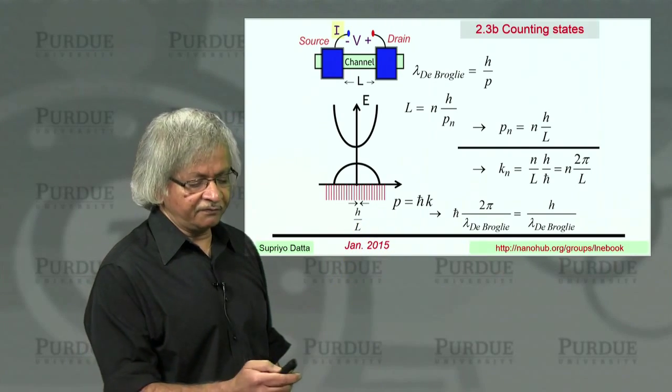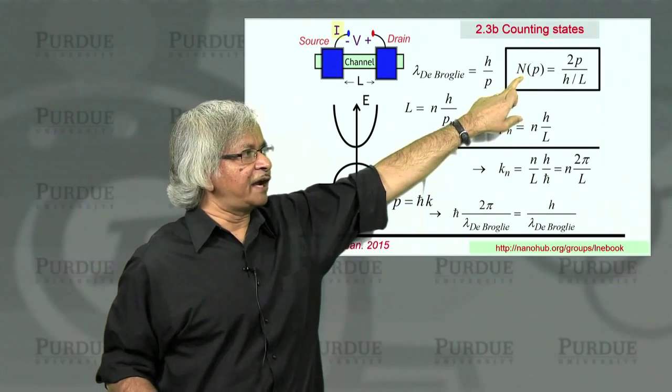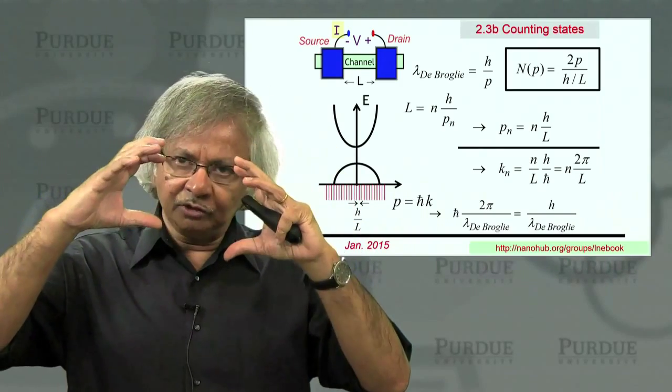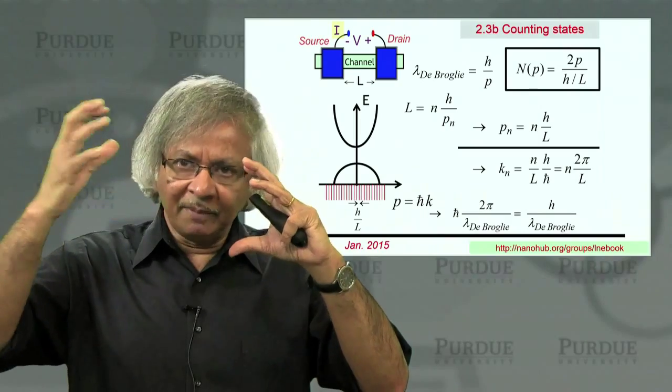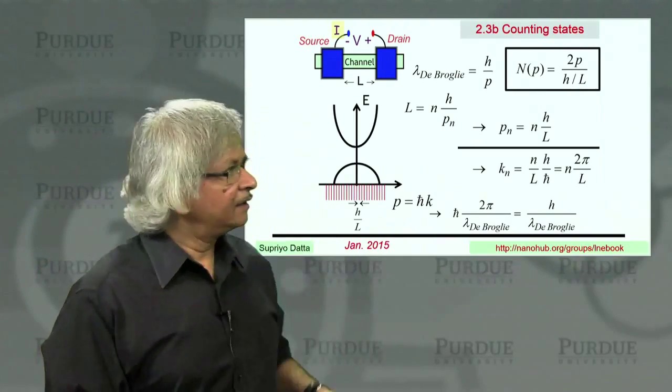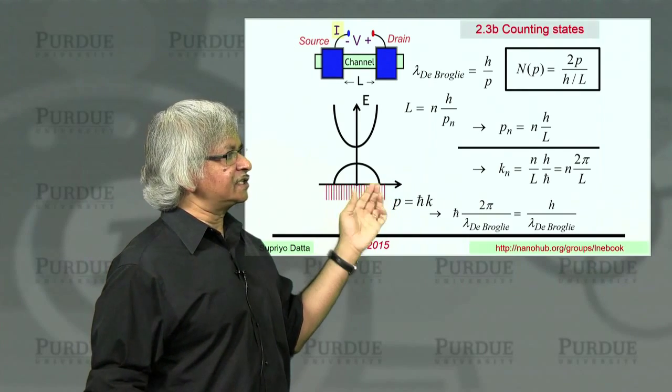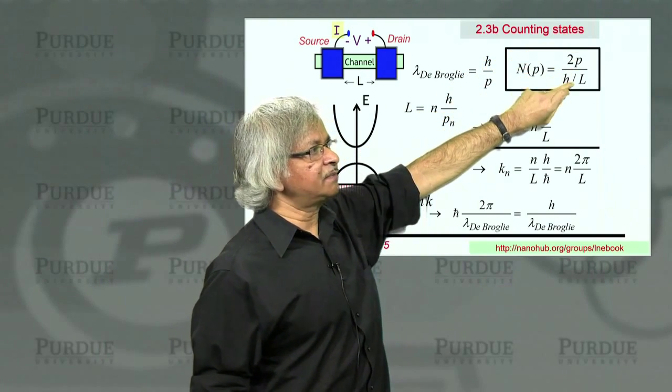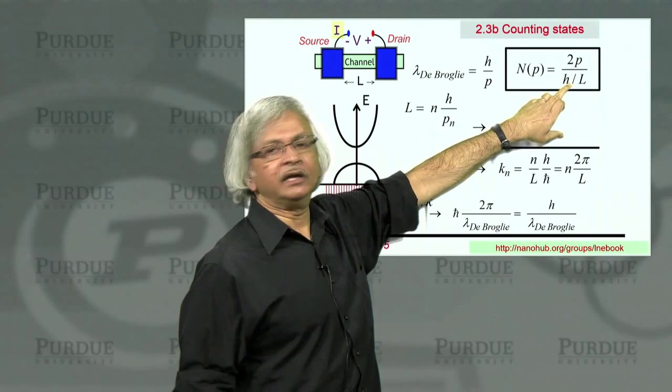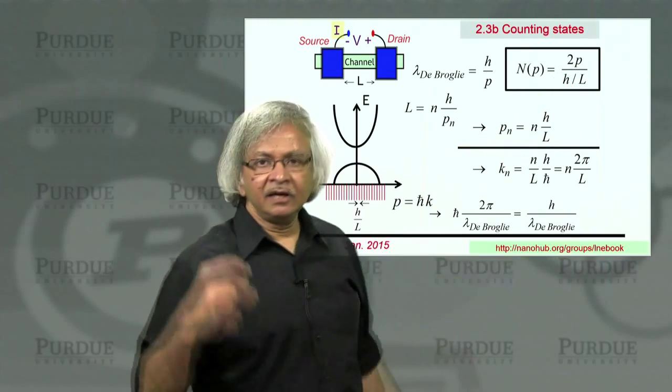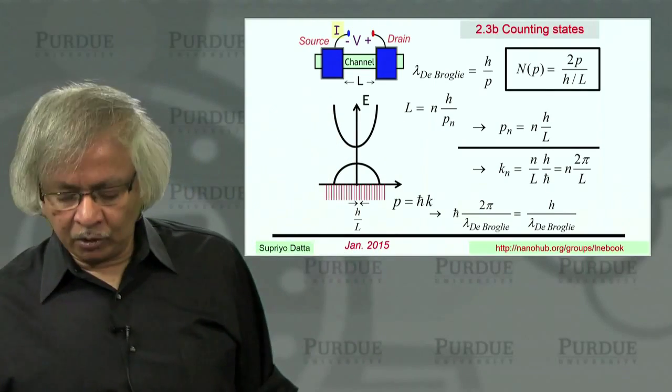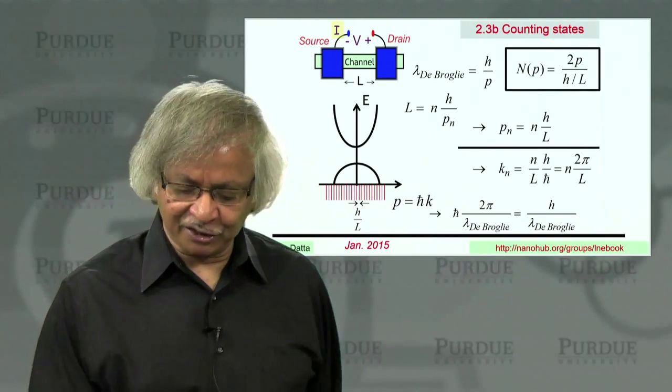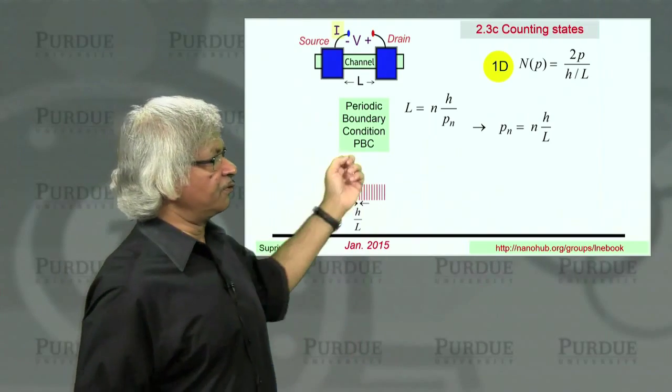But in terms of momentum then, the allowed values are spaced by h over L. And so now you can easily find this function that we talked about. We are trying to write a function N(p), which tells me how many states are allowed, how many momentum states are allowed, whose momentum is less than some value p. Well, in 1D, if you want all these states going from minus p to plus p, that means the range is 2p, and they're spaced by h over L. So you divide 2p by h over L. So this would be N(p) in one dimension.